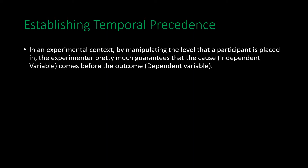When establishing temporal precedence in an experimental context, by manipulating which level of the independent variable a participant is placed in, the experimenter guarantees that the causal variable comes before the outcome variable. We don't have experiments where we measure people on our metric of interest first and then put them into groups of the independent variable — that just wouldn't make sense.